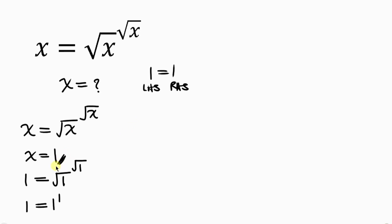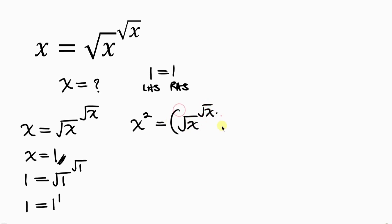To find the remaining solution, our first step will be to square both sides. So x squared equals the square root of x raised to the power of the square root of x — I still need to square this right-hand side.